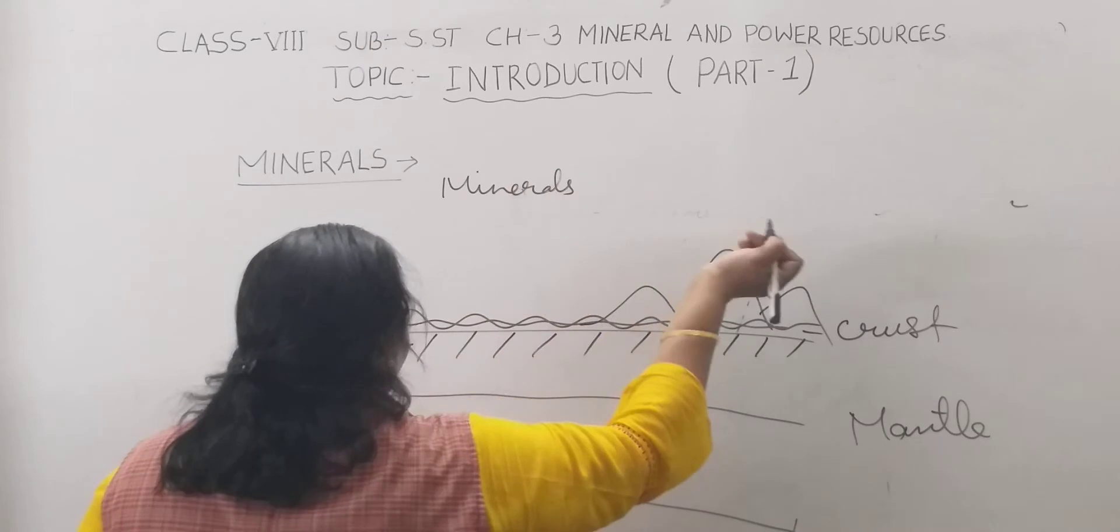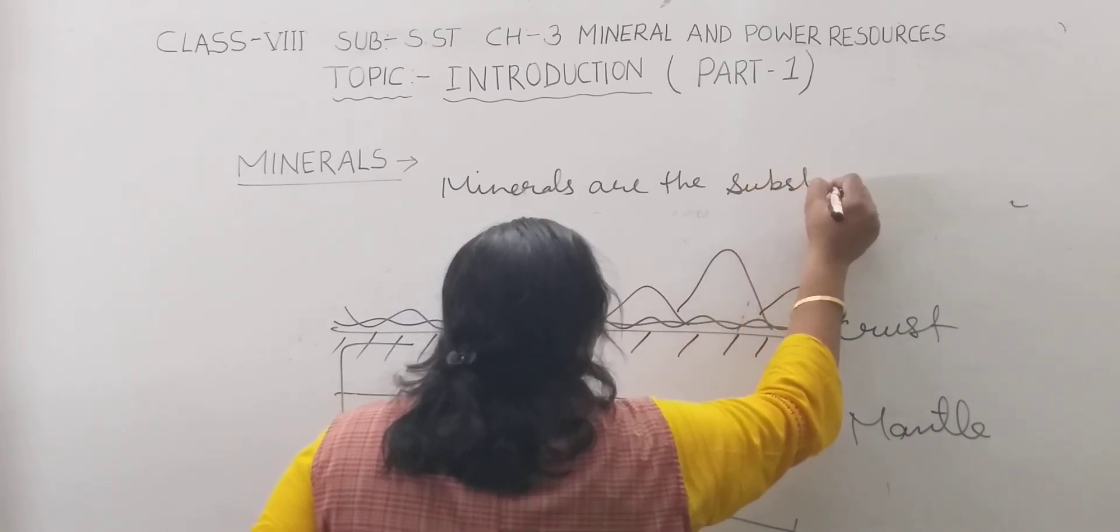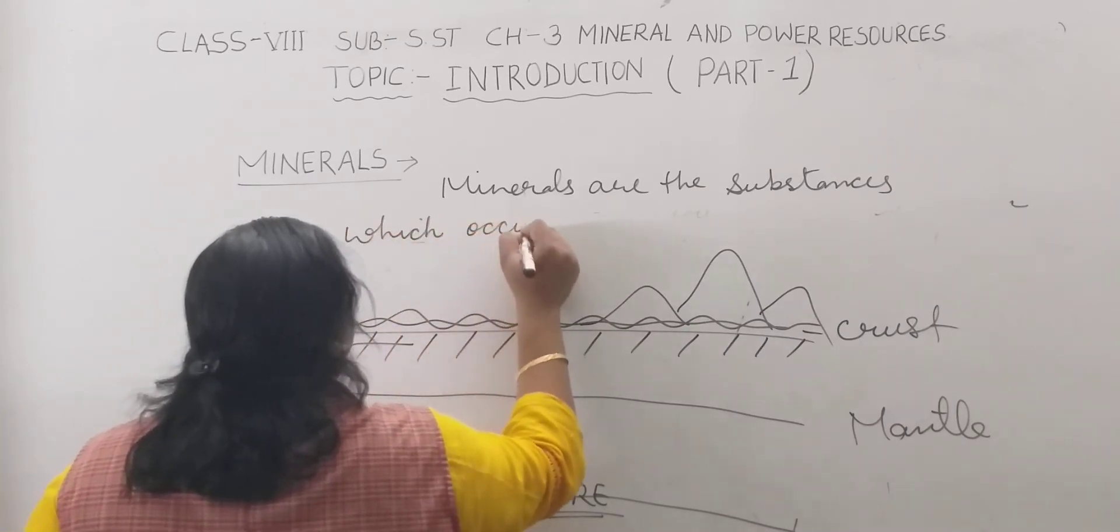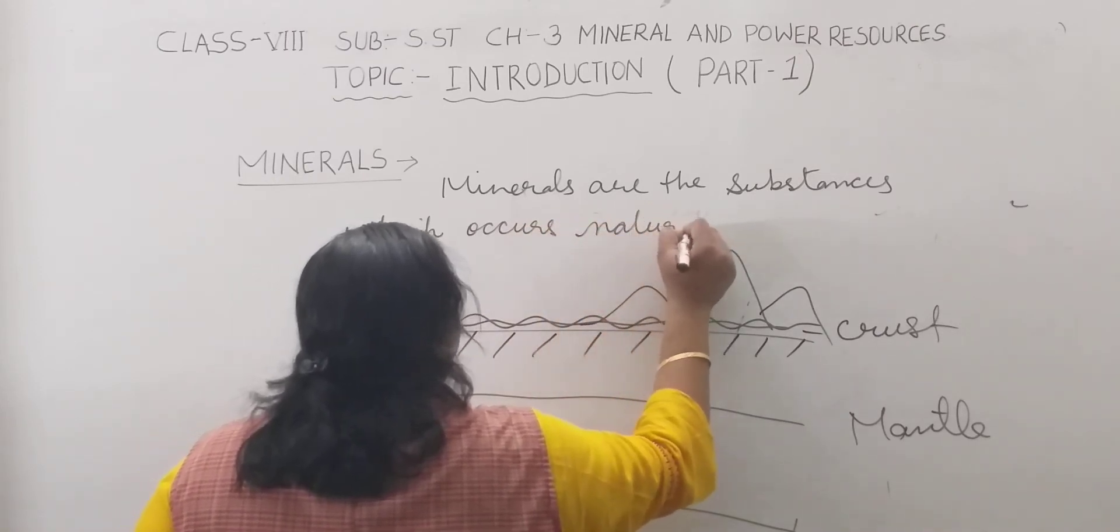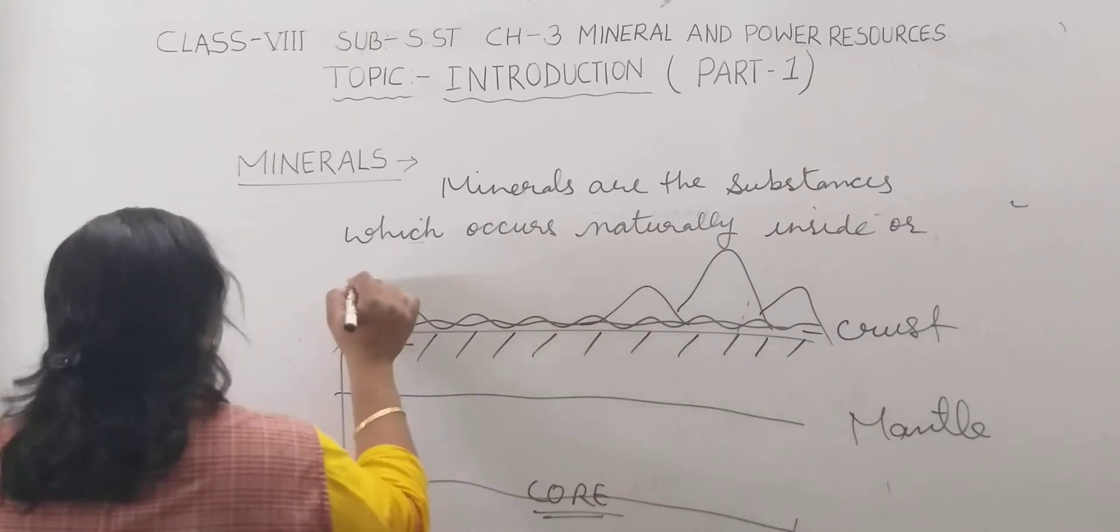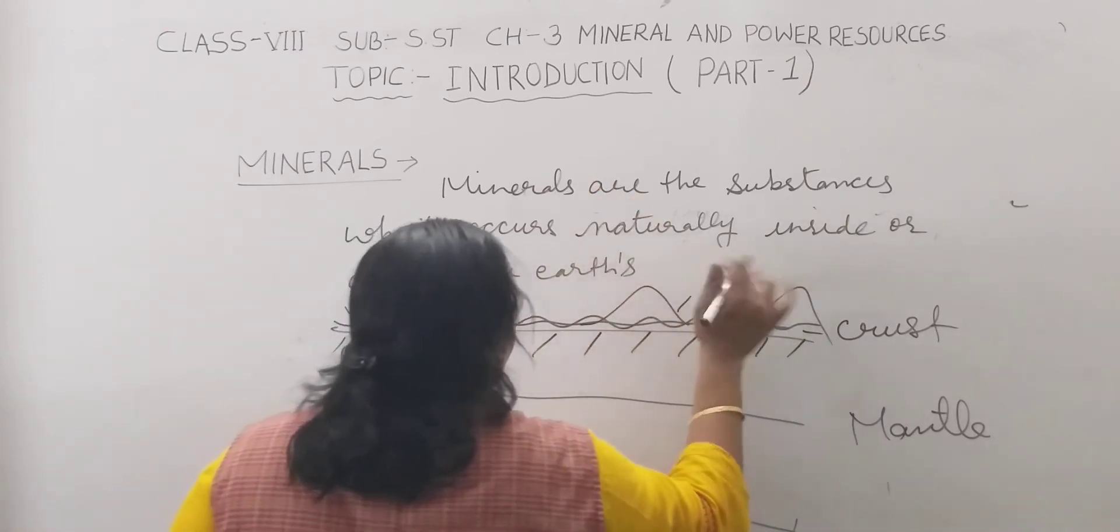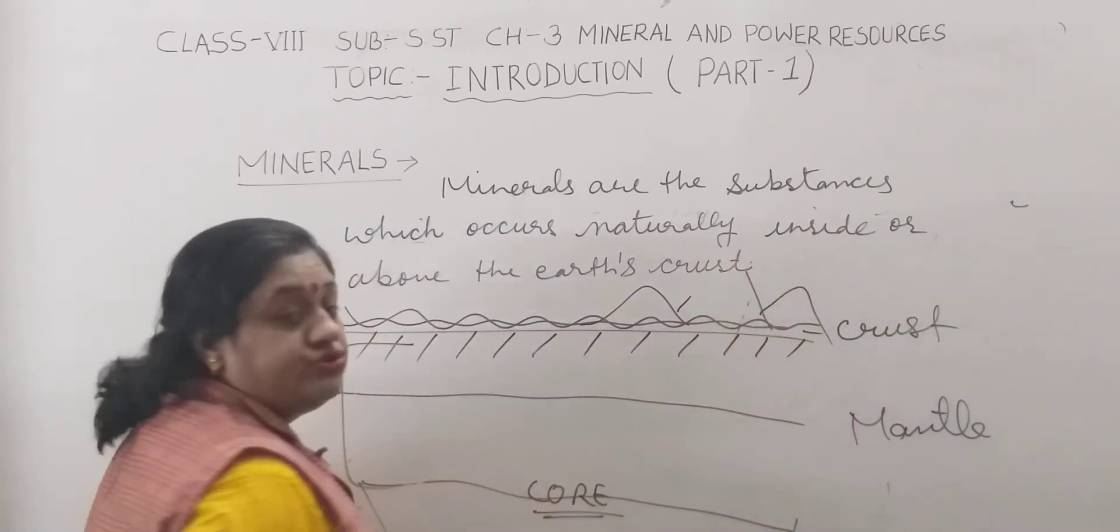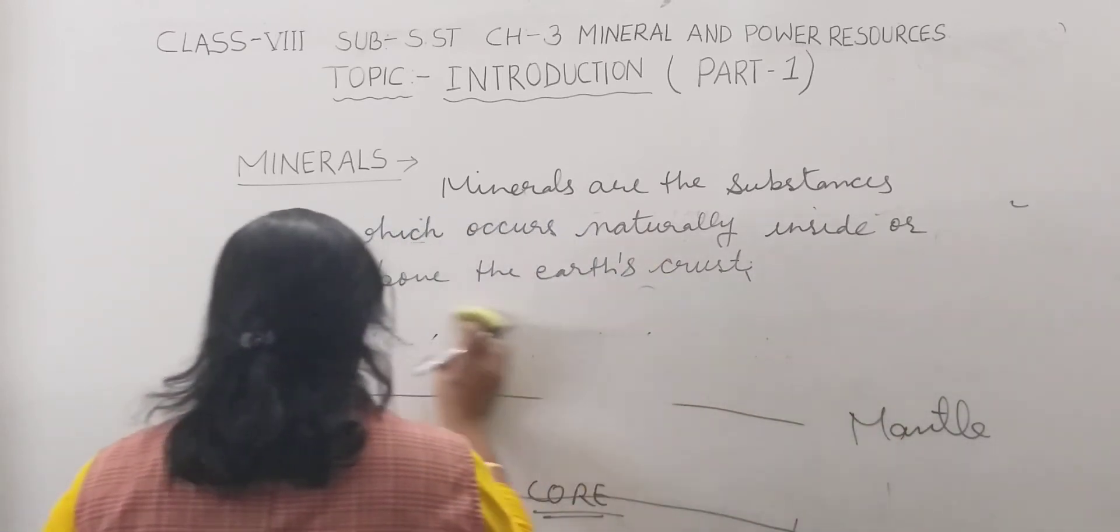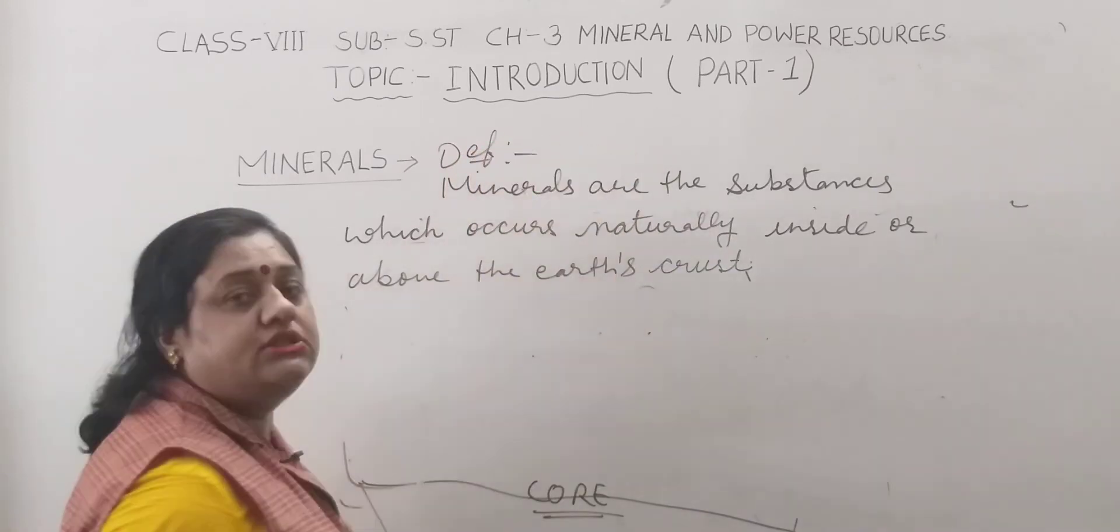So minerals above the crust, this is the location of minerals. Minerals are the substances, in the language we want to define: minerals are the substances which occur naturally inside or above the Earth's crust. So here we got the point, we got the definition: what are minerals? This we can see is the definition of minerals.